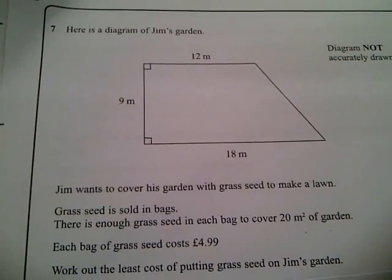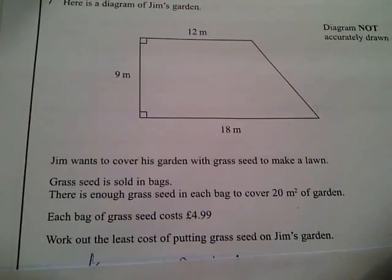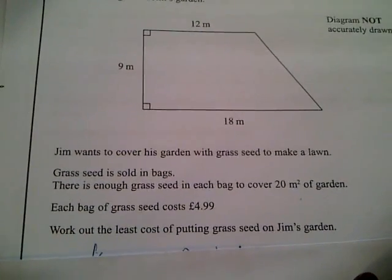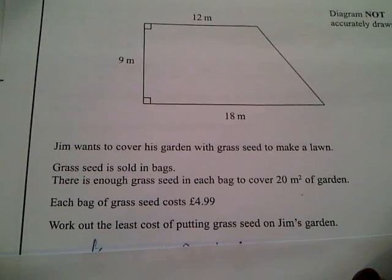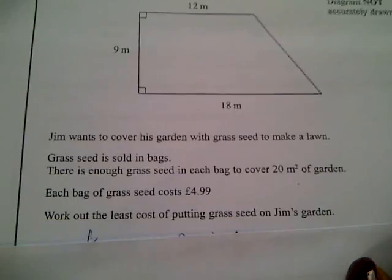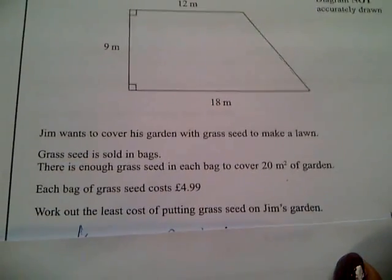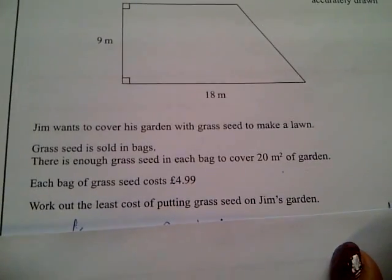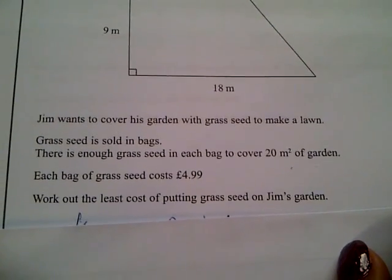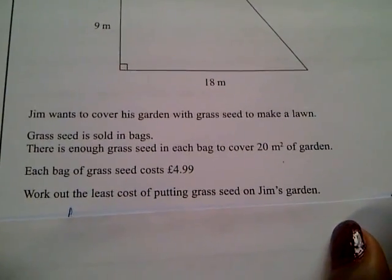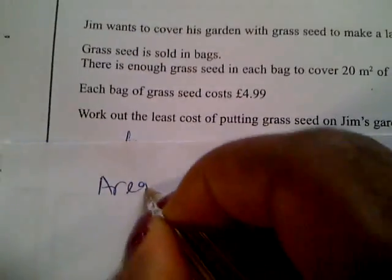Question number seven: Here is a diagram of Jim's garden. Jim wants to cover his garden with grass seed to make a lawn. Grass seed is sold in bags. There is enough grass seed in each bag to cover 20 meters squared of garden. Each bag of grass seed costs £4.99. Work out the least cost of putting grass seed on Jim's garden. First of all, let's find the area of his garden.